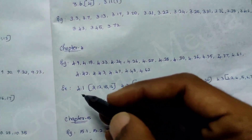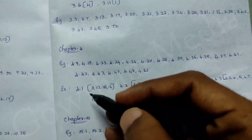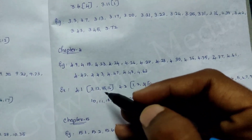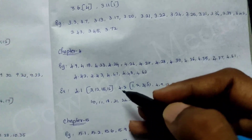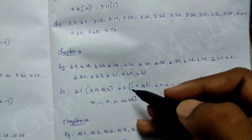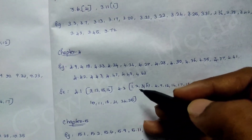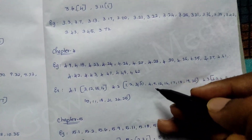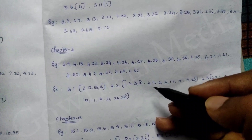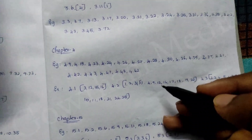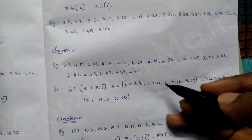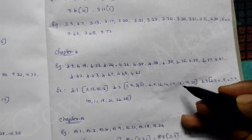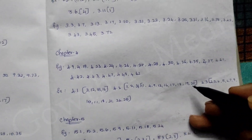Exercise 4.1 — 3rd sum, 12th sum, 15th sum, 16th sum. 4.2 — 1st sum, 2nd sum, 3rd sum, 4th sum, 9th sum, 16th sum, 17th sum, 18th sum, 19th sum, 20th sum.